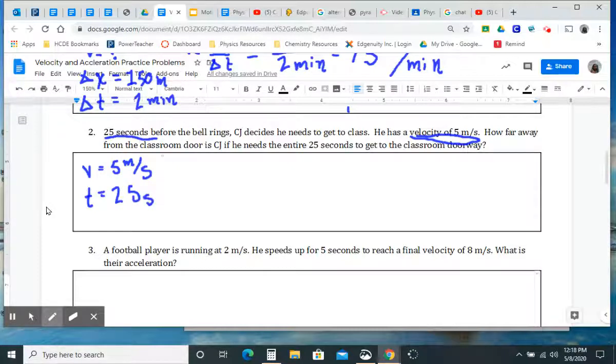Let's keep reading. How far away from the classroom? So how far? That's asking me a question. How far? We're trying to find a distance. And so that's going to be our delta X. And that's what we're looking for, that's what the question wants to know. So how far away from the classroom door is CJ if he needs the entire 25 seconds to get to the classroom doorway? So we have a delta X, we have a V, we have a T. This should be easy. We said earlier that V equals delta X divided by delta T, or t in this case. Either one's fine. They basically mean the same thing.